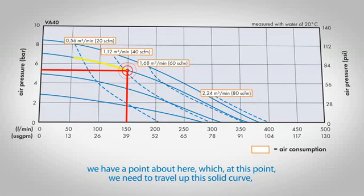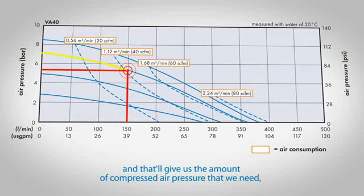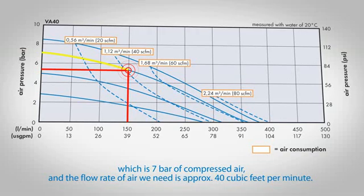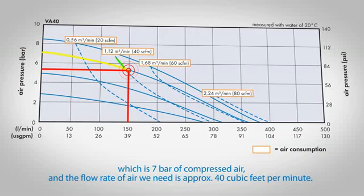Which at this point we need to travel up this solid curve, and that'll give us the amount of compressed air pressure that we need, which is 7 bar of compressed air, and the flow rate of air we need is approximately 40 cubic feet per minute.